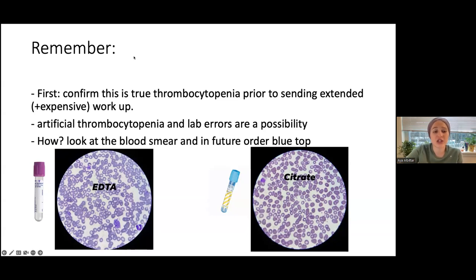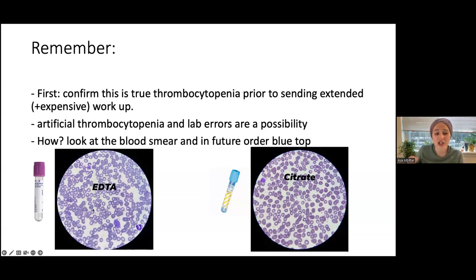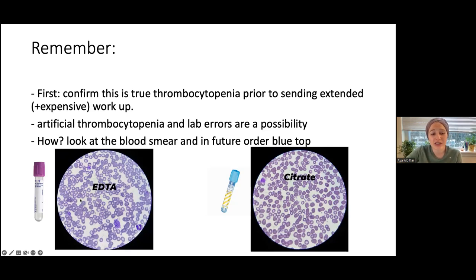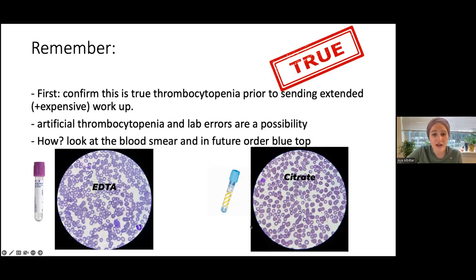Artificial thrombocytopenia, also called pseudothrombocytopenia, is common and lab errors always exist. When we send a lab, there is a purple tube and a blue tube. The purple one uses EDTA as the anticoagulant, and this can actually cause clumping in the platelets, so you'll get a pseudo-low platelet count. To avoid this, you basically avoid using the purple tube and use the blue one instead.